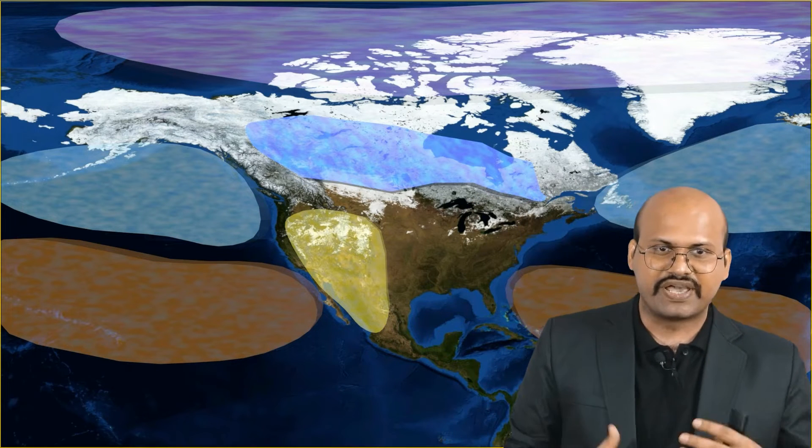To further understand this concept, let's focus on North America, where we can see different types of source regions. Over deserts, the air mass formed is hot. Over snow-covered regions, the air mass is cooler. Further north in the Arctic region, even colder air masses form. In the marine tropical region, warmer water produces a warm air mass, while in the temperate marine region, cooler water produces a cool air mass. So based on the temperature and humidity of the source region, the air acquires its properties and forms an air mass.